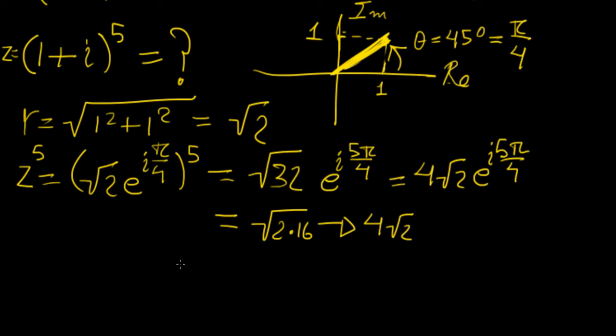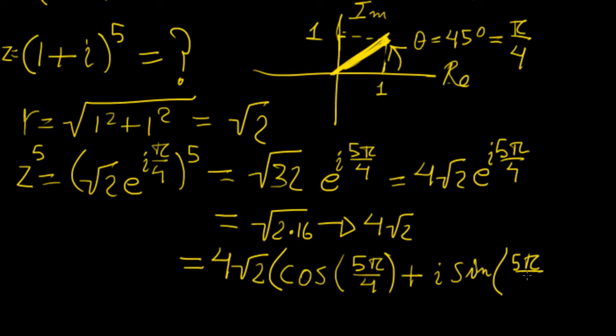And then we're going to have 4 square root of 2 cosine of 5 pi over 4 plus i sine 5 pi over 4. If we plug this into our calculator, this comes down to minus 4 minus 4i. So that's the complex number we get in its Cartesian form.